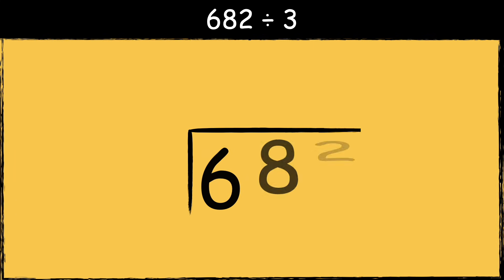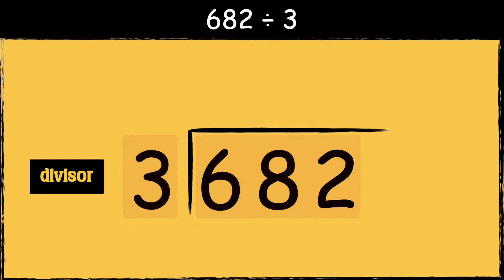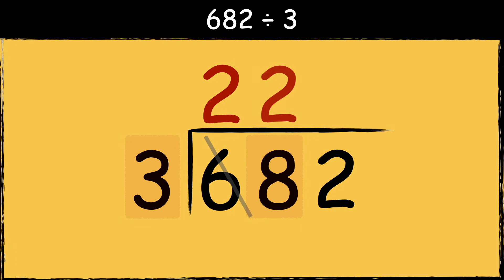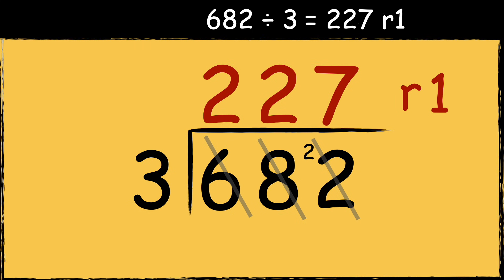Here's another example: 682 divided by three. So we need to find out how many times the divisor fits into these numbers. Three goes into six twice. Three goes into eight twice with two left over. Three goes into 22 seven times with one left over. As there are no more numbers to divide, this left over one is the remainder. So the answer is 227 remainder one.